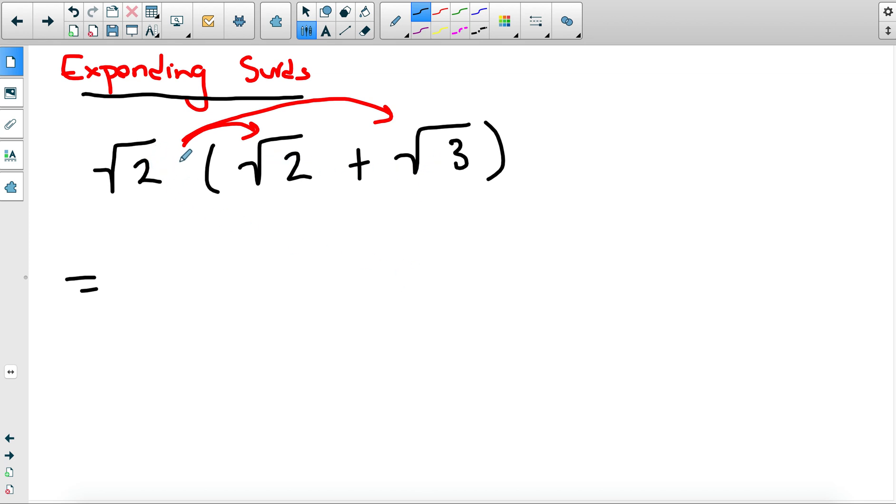So square root of two times square root of two—well this is just basically square root of two squared which, as we mentioned, the property cancels out, so you're left with two. Be careful again: it's not a four, it's the number underneath the surd. Then you have square root of two times square root of three, and in this case we can use property three which will be two times three.